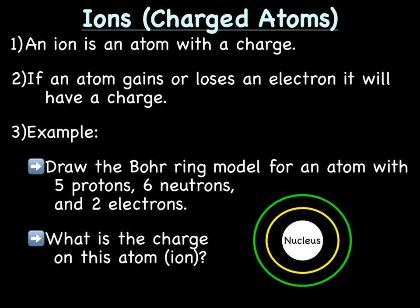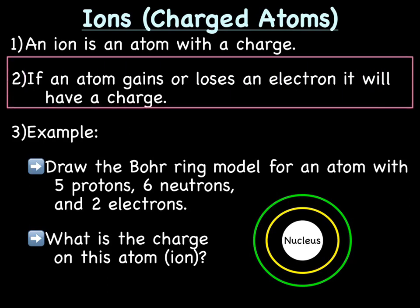Last topic for today is talking about ions, really quickly, or charged atoms. This is a topic we're going to spend a lot of time on in future, so this one's just an introduction. An ion is an atom with a charge. Remember that atoms don't normally have a charge, right? They have the same number of protons and electrons, so there's no charge. But an ion is an atom with a charge. How does that happen? If an atom gains or loses an electron, it'll now have a charge because it doesn't have the same number of protons as electrons.